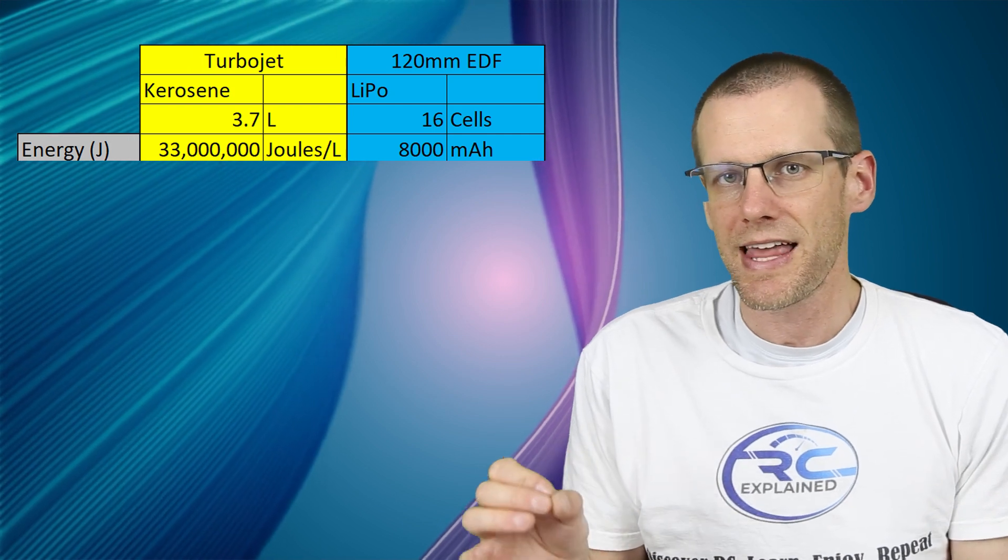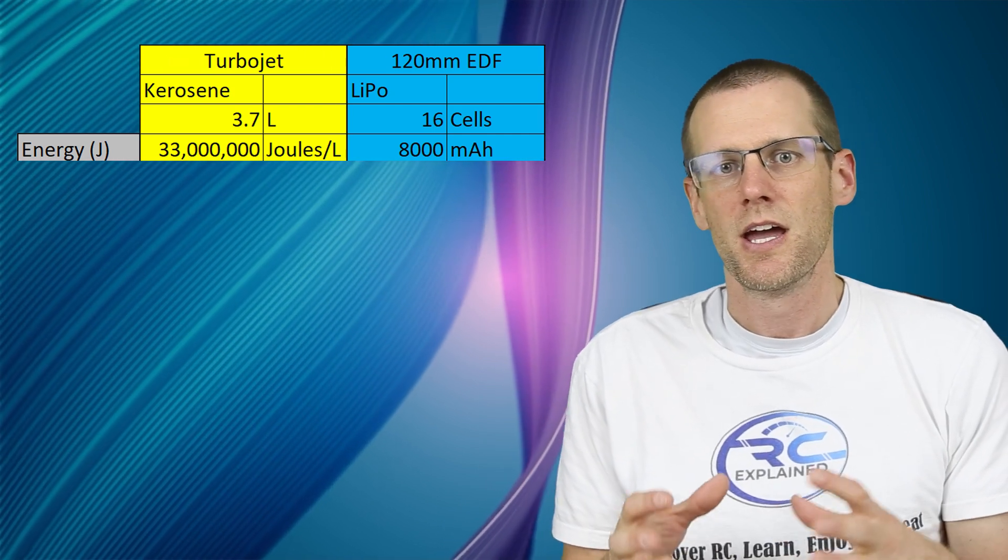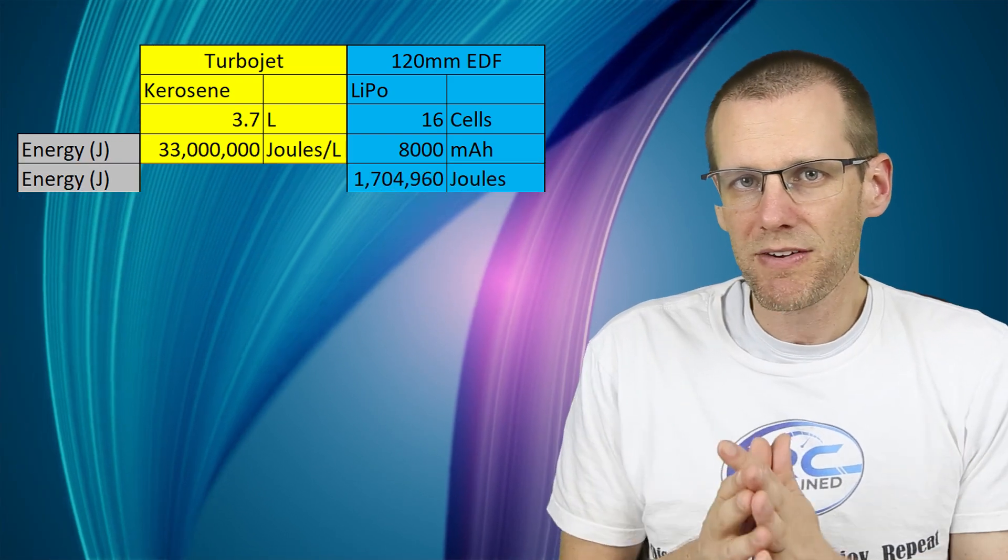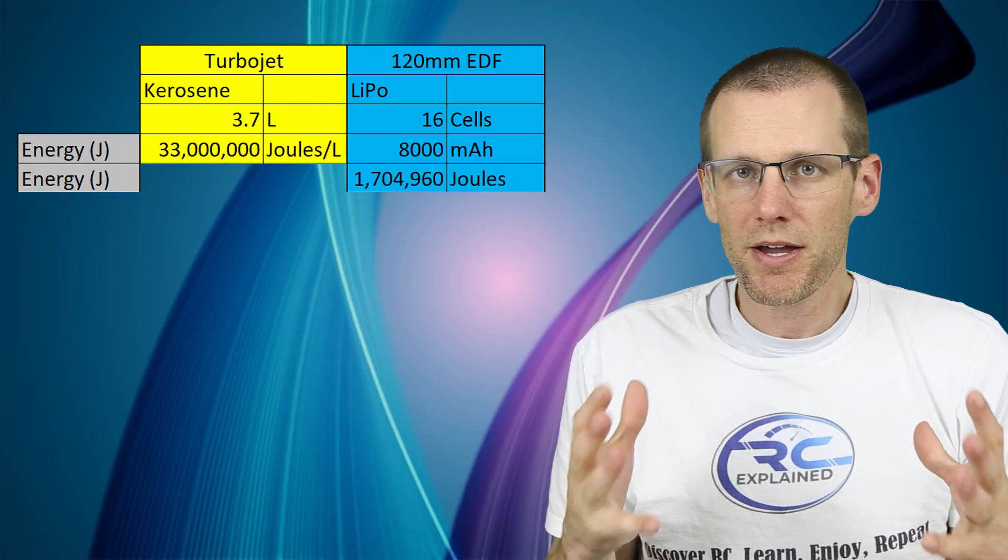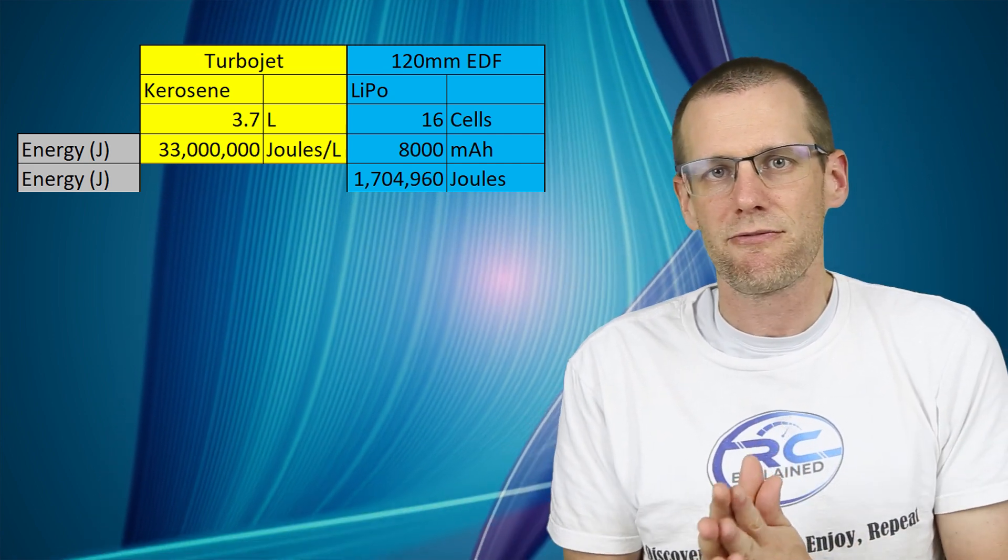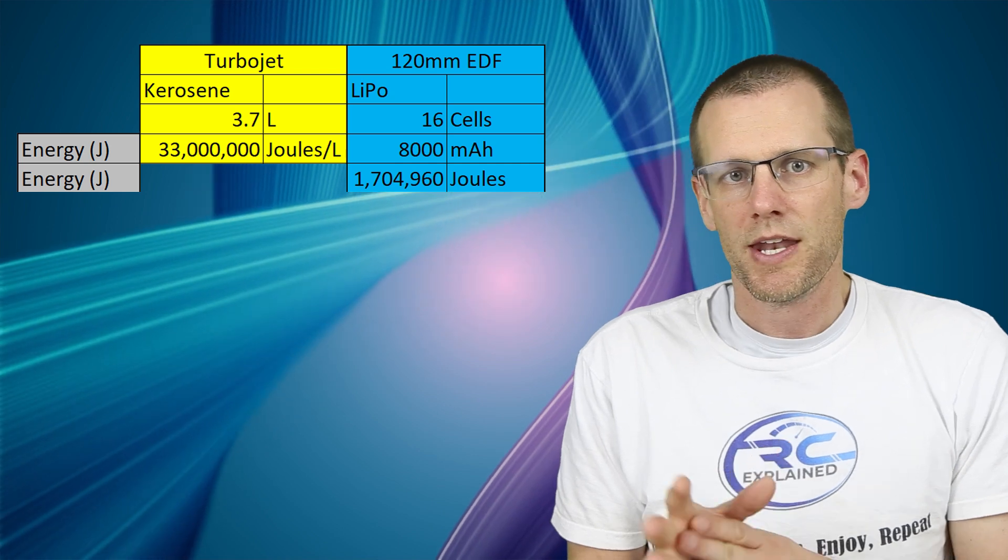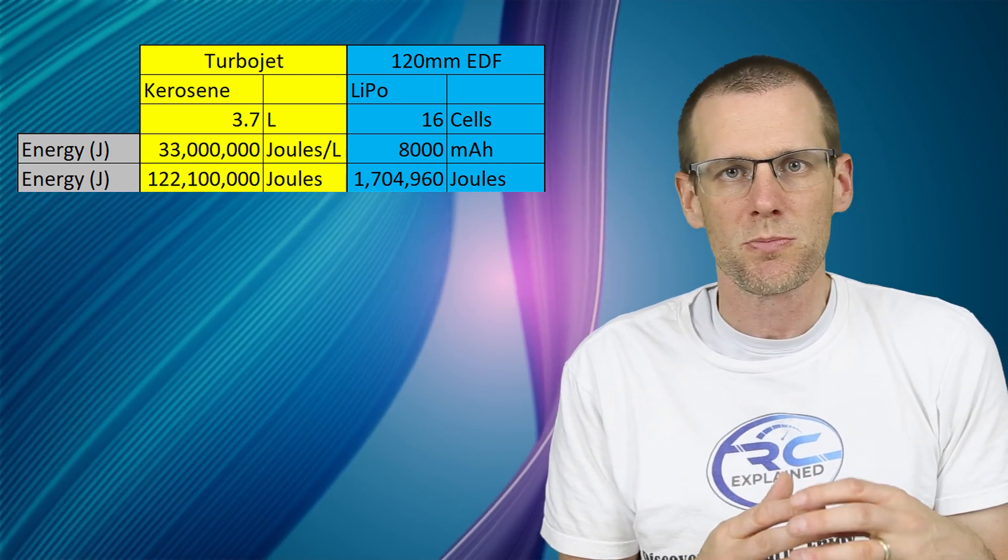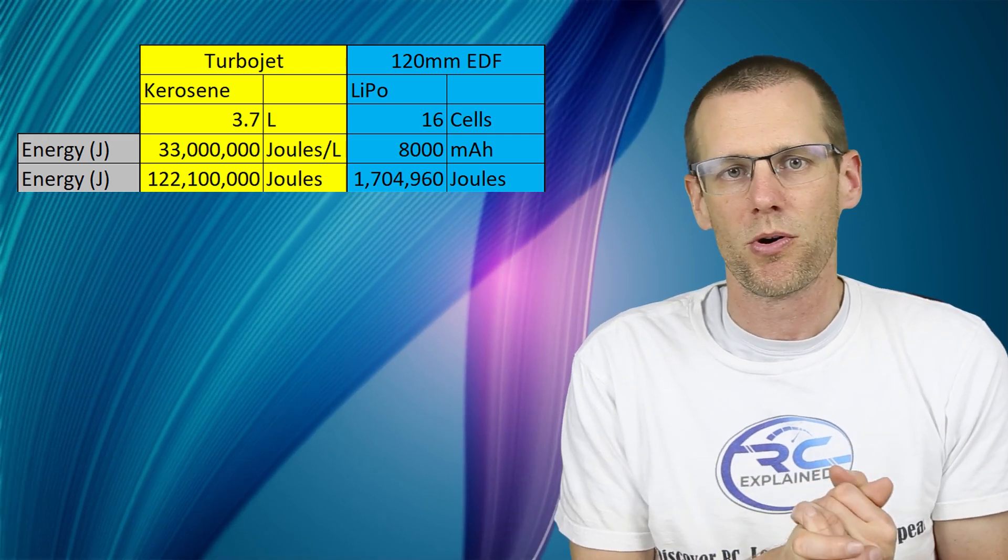So when we take our 16 cell at eight amp hour, we're going to get 1.7 mega joules. That's 1.7 million joules of energy. That's quite a bit far off compared to the 33 mega joules that we get from our one liter of fuel. Now comparing that we get about 122 mega joules when you multiply that by the 3.7 liters that we're going to have on board.